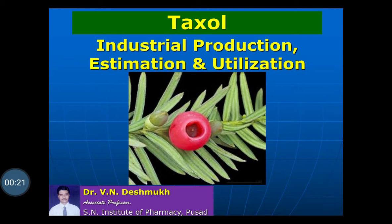Taxol is a chemical constituent present in the Taxus plant. The synonyms for Taxus are Talispatra, Himalayan Yew, or Birmi. The taxol present in the Taxus plant is less than 0.04%. Taxol is obtained from different varieties — Taxus baccata, Taxus brevifolia, Taxus canadensis, Taxus cuspidata, and Taxus wallichiana — belonging to family Taxaceae.